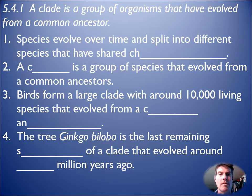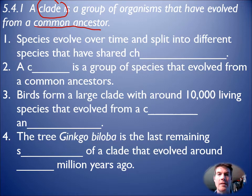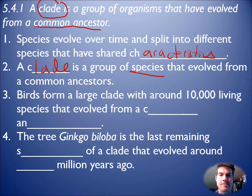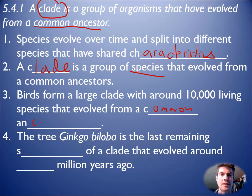We need to look at this word: the clade — organisms that came from a common ancestor and species that share characteristics that have diverged. A clade is a group of species evolved from a common ancestor. We'll look at a lot of bird species: 10,000 living species all coming from a common ancestor.